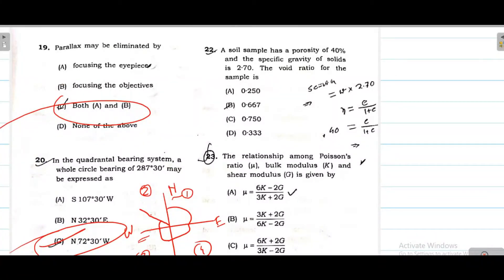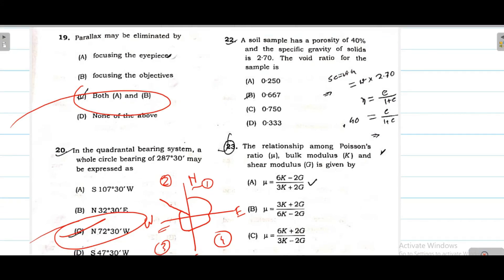Question 22. A soil sample has a porosity of 40 percent and specific gravity of solid is 2.70. Void ratio and porosity - there's a simple formula. Void ratio e equals n divided by 1 minus n. The porosity value is 40 percent. 1 minus 40 percent equals 60 percent. That means 40 by 60. If you cancel, 2 by 3. If you divide 2 by 3, it's 0.667. I hope this question is clear.